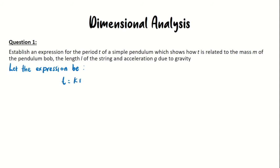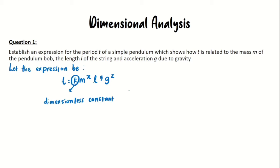Let's start by letting the expression be: T equals k times m to the power of x, l to the power of y, and g to the power of z, where k is a dimensionless constant.